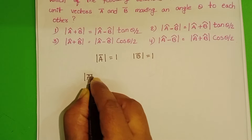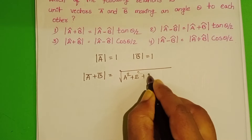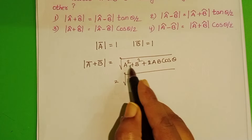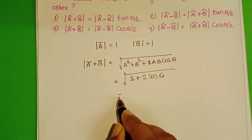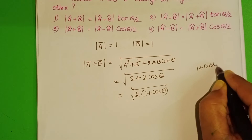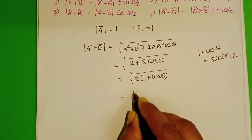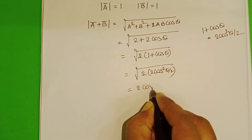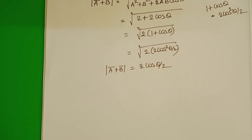First, take the magnitude of the sum of the given two unit vectors: square root of a squared plus b squared plus 2ab cos theta. Magnitude of a is 1 and b is also 1, so we get square root of 2 plus 2 cos theta. Taking 2 common: square root of 2 into (1 plus cos theta). Since 1 plus cos theta equals 2 cos squared (theta/2), we get square root of 2 into 2 cos squared (theta/2), which becomes 2 cos(theta/2).